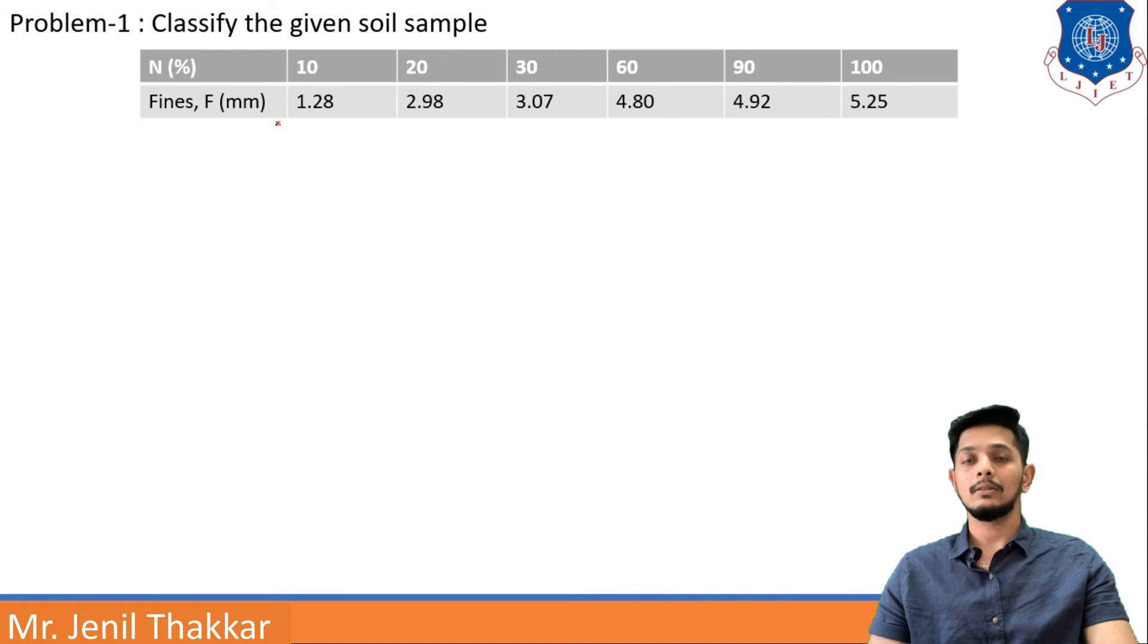Fines or we can say F in mm. So sizes of the soil are given 1.28 mm, 2.98 mm, 3.07 mm, 4.80 mm, 4.92 mm and 5.25 mm. So these are the sizes and these are the percentages passing.